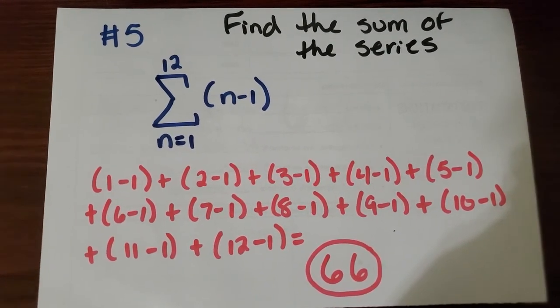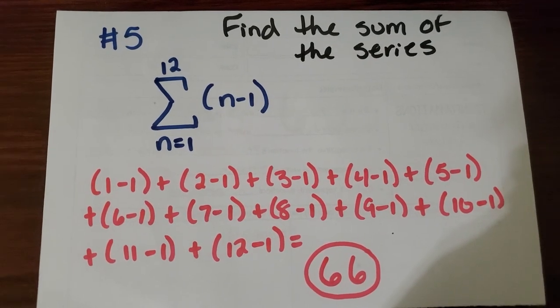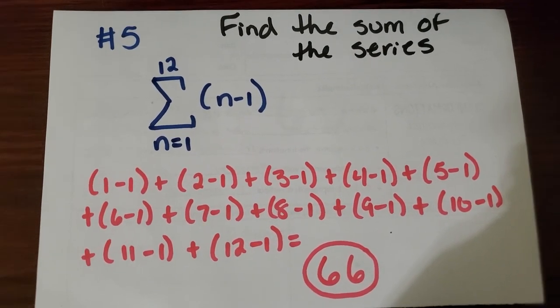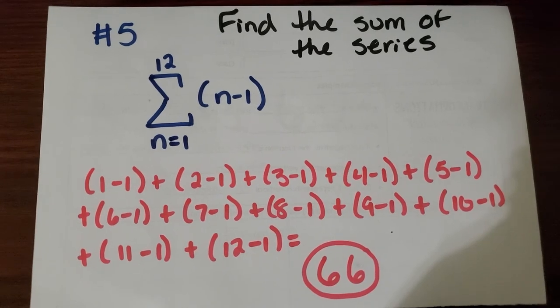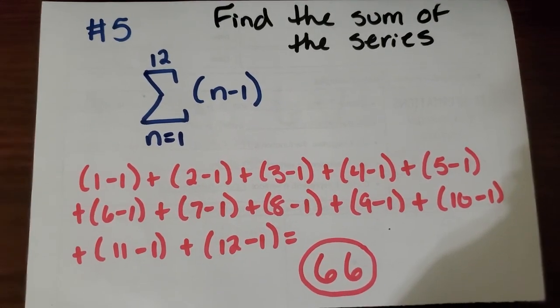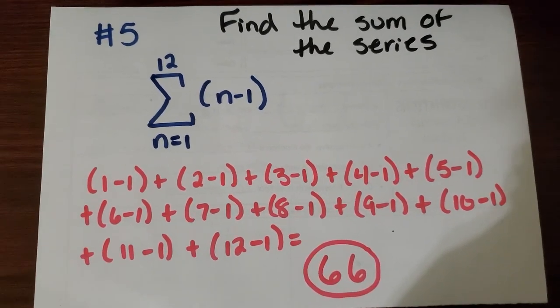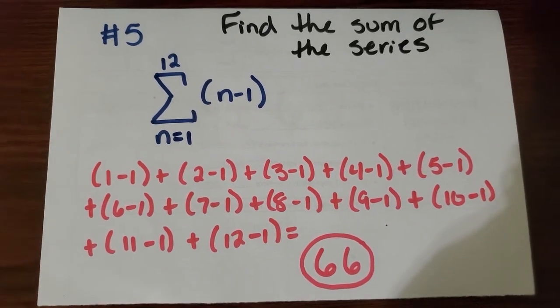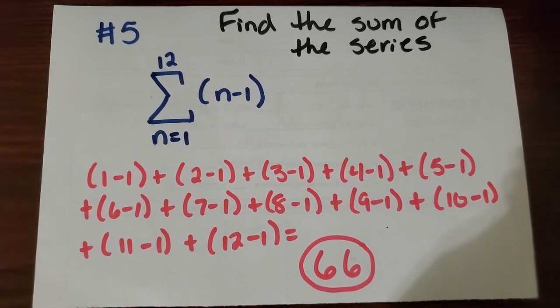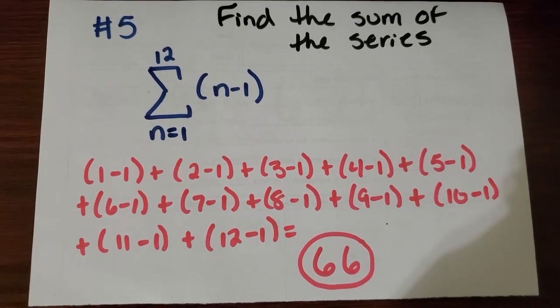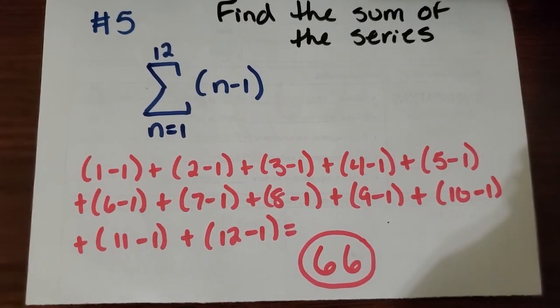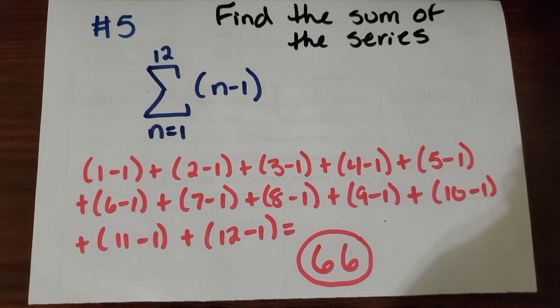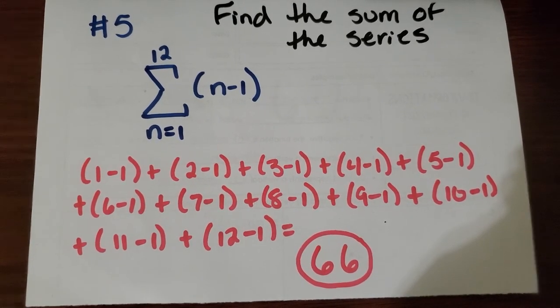So if we were to plug in 1, first we would get 1 minus 1. After 1 we would plug in 2, so then we would write 2 minus 1, and then we would continue on. And then simply either using pencil and paper to do the addition, or using our handy dandy calculator, we will find that the sum of this particular series is 66.